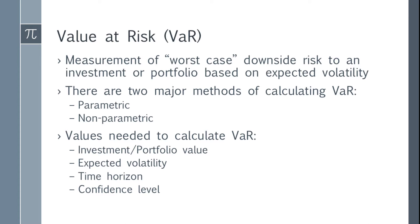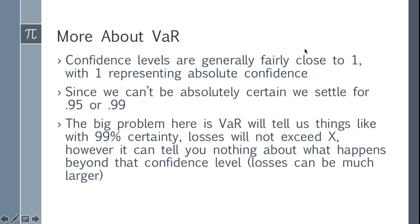You need a few values to calculate VAR. You need the current portfolio value, and you also need a measurement of expected volatility — we're going to use an annualized volatility and then adjust it for the time horizon. Then you need a confidence level. This confidence level is generally pretty close to 1, but it can't be 1, because that would represent absolute certainty that losses will not exceed some value. Since we can't be absolutely certain, we usually settle for something pretty close to 1.